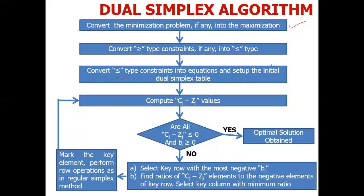Once we have developed the standard form, we will develop the initial simplex table the same way as we created the simplex table. Then we will calculate the value of CJ minus ZJ. In the dual simplex method, CJ minus ZJ will be less than or equal to zero, meaning the optimality condition will be fulfilled.